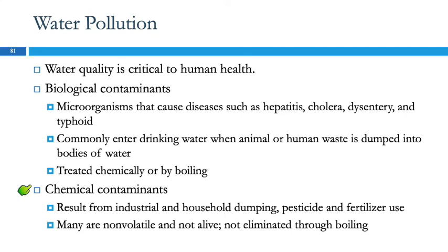Chemical contaminants are mostly from humans, though there are water sources naturally contaminated with chemicals. Most of this type of contamination comes from industrial and household dumping, or runoff from fertilizer and pesticide use. Most of these substances are not volatile, meaning they don't evaporate easily. Because they're not alive, you can't kill them — so boiling the water does not take care of chemical contaminants. If you boiled a bunch of the water off, you'd actually be concentrating the chemicals. Getting rid of chemicals is trickier — it requires various types of filtering.